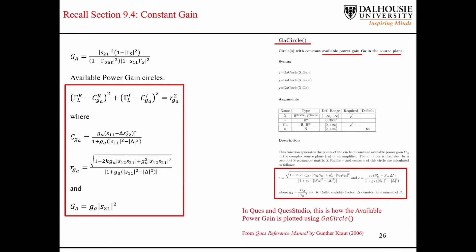In QUCS and QUCS Studio, there's a function called GA circle, and GA circle plots constant available power gain circles in the source plane. So there's nothing else we need to do here. Our circle equations for the available power gain is already in the gamma s plane. I can see here that I have gamma l, that should be gamma s. I'll fix that before I upload these slides to Brightspace. Everything else should be correct.